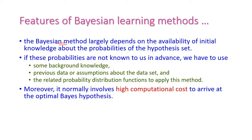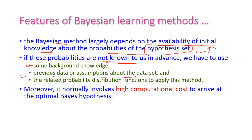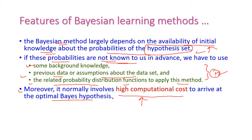Bayesian methods are highly dependent on the availability of initial knowledge about the probability of the hypothesis set. If these probabilities are not known in advance, we have to use background knowledge of the dataset, previous data, or assumptions about the related probability distribution function. It also normally involves a high computational cost to arrive at the optimal Bayes hypothesis, meaning the complexity is very high in Bayesian methods compared to other machine learning approaches.